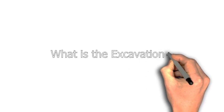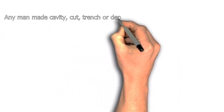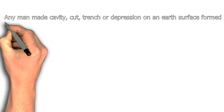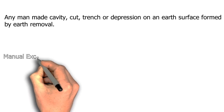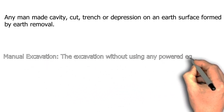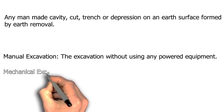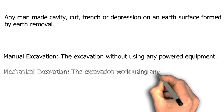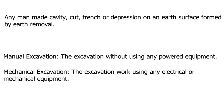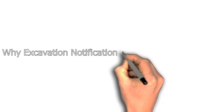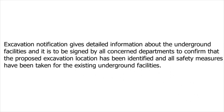What is excavation? Any man-made cavity, cut, trench or depression on an earth surface formed by earth removal. Manual excavation is the excavation without using any powered equipment. Mechanical excavation is the excavation work using any electrical or mechanical equipment. Why is excavation notification required? It gives detailed information about underground facilities and must be signed by all concerned departments to confirm that the proposed excavation location has been identified and all safety measures taken for existing underground facilities.